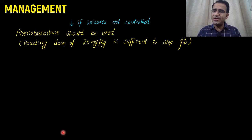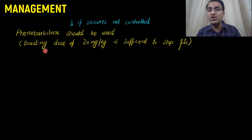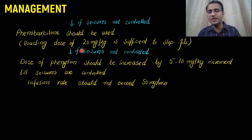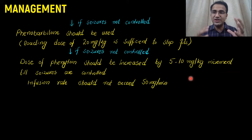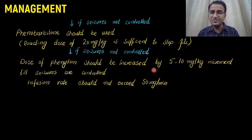Even after giving phenytoin, if the patient is still seizing, you need to consider phenobarbitone. Phenobarbitone can be used with a loading dose of 20 mg per kg and is usually sufficient to stop the seizures. In the worst case scenario, if seizures are still not controlled, you can increment the phenytoin dose by a further 5 to 10 mg per kg until the seizures are controlled, keeping the infusion rate not exceeding 50 mg per minute.